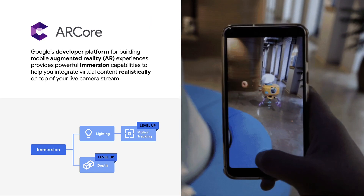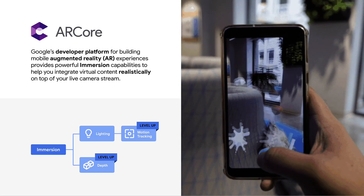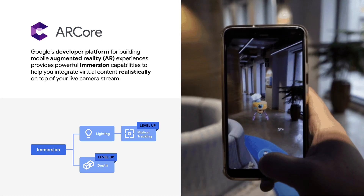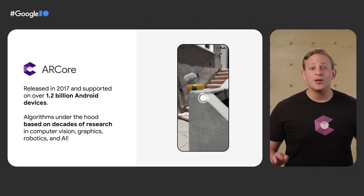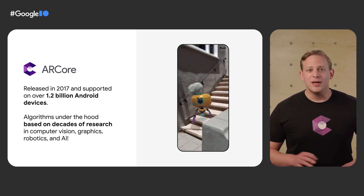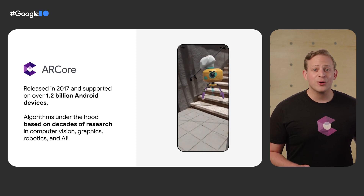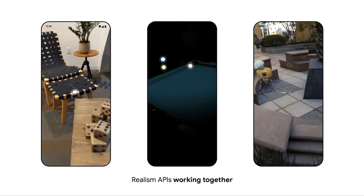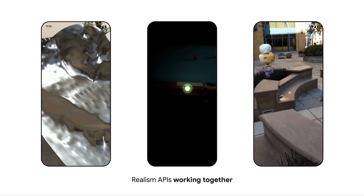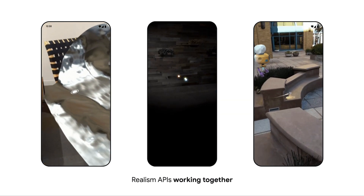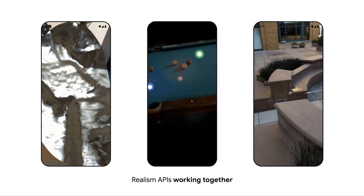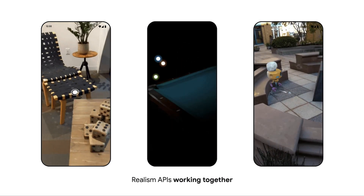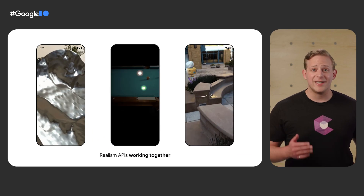ARCore is Google's developer platform for building mobile AR experiences. It packages a variety of immersion capabilities like motion tracking, depth, and lighting to help you integrate virtual content into your live camera stream. These capabilities are supported on over 1.2 billion ARCore certified phones, and the algorithms powering them are based on years of academic research. These algorithms work together to enable some incredible things, like the experiences here.